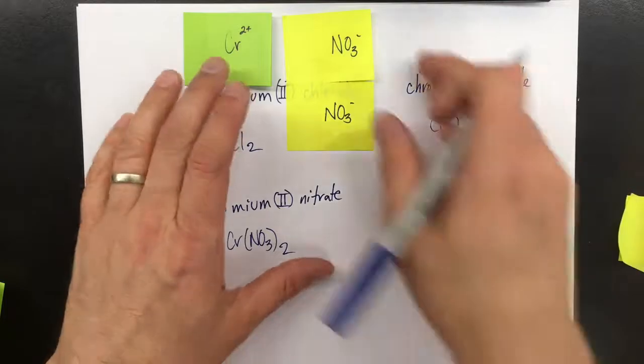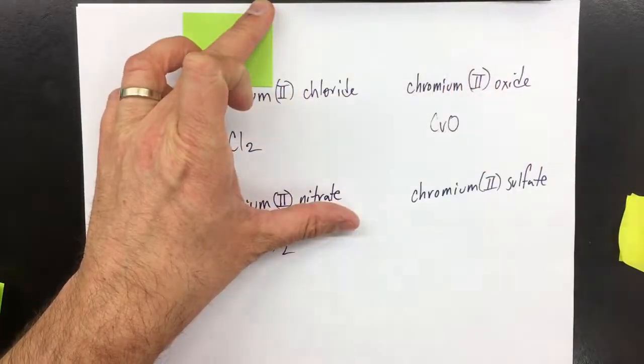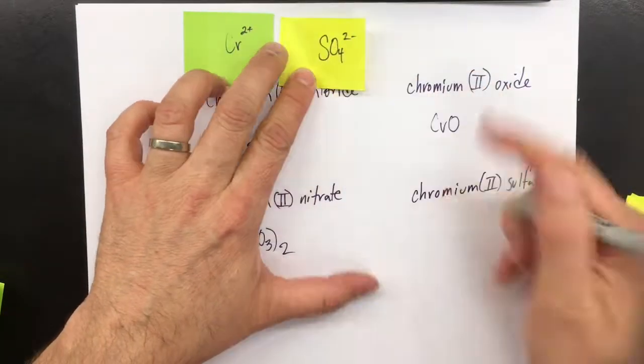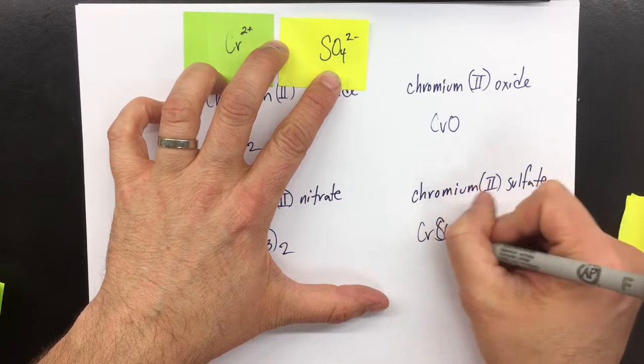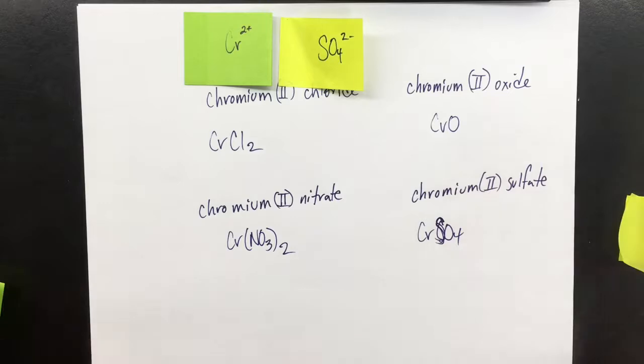Chromium(II) sulfate: sulfate, you'll recall, has a 2- charge. So 2+ and 2-. Cr - we don't need brackets - SO4, right? Because we don't have a bracket here because we only need one sulfate.